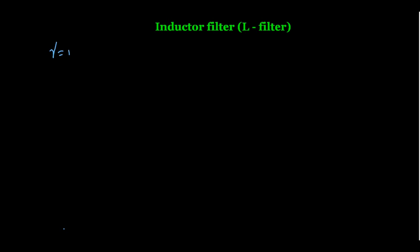If we want a pure DC power supply, we have to minimize the AC component in the rectifier circuit. In the case of the half-wave rectifier, the ripple factor is 121%, and for the full-wave rectifier and bridge rectifier, the ripple factor is 48%. This indicates that the amplitude of the AC component in the full-wave rectifier is 48% of the DC component. So we need to reduce the ripple factor.